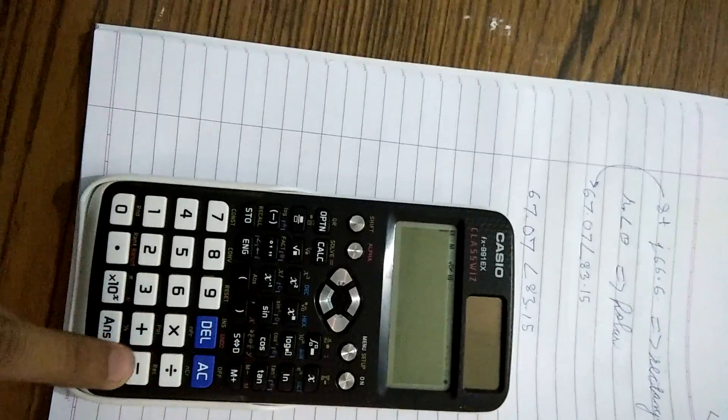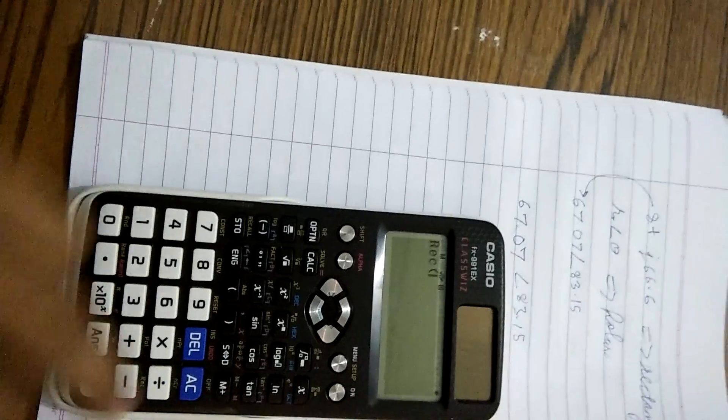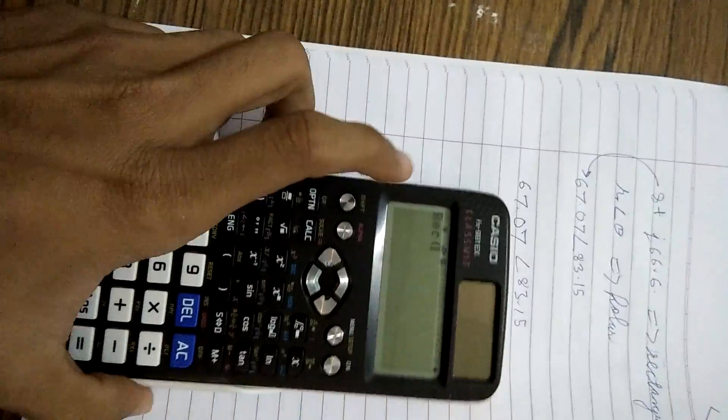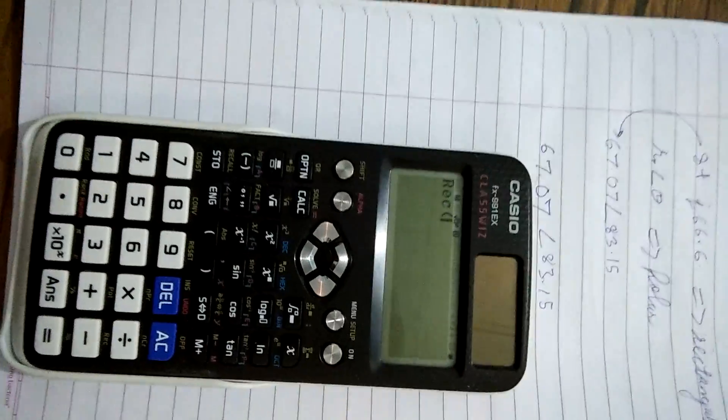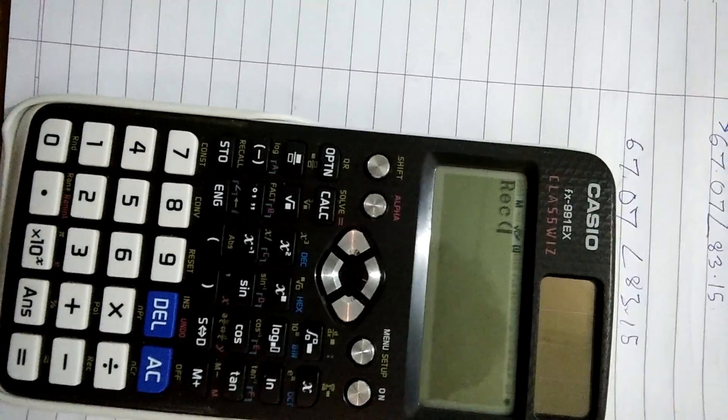What we're going to do is press the shift button and press minus button. REC, that is rectangular form, gets displayed on the screen.